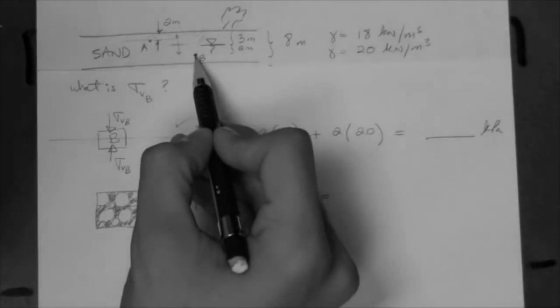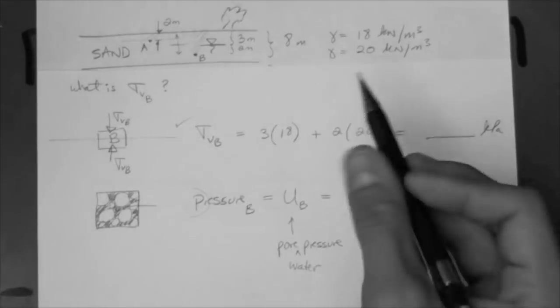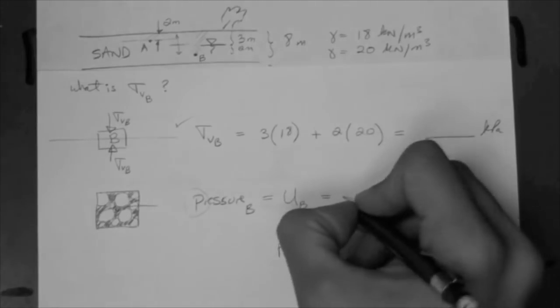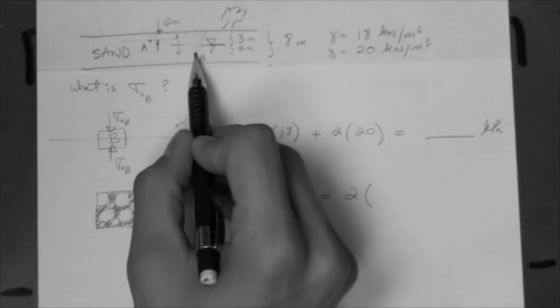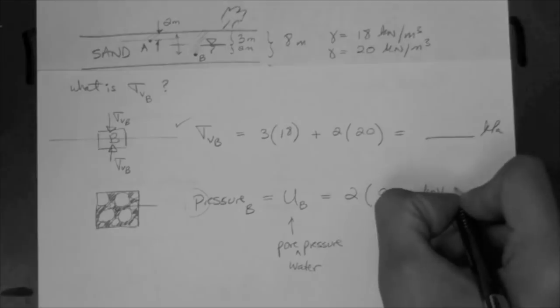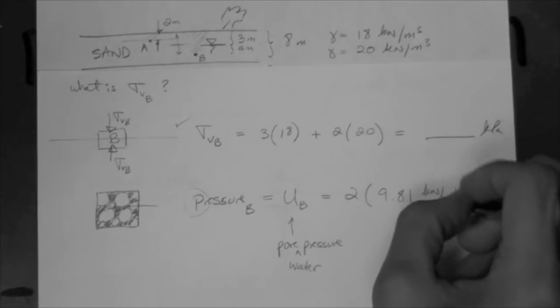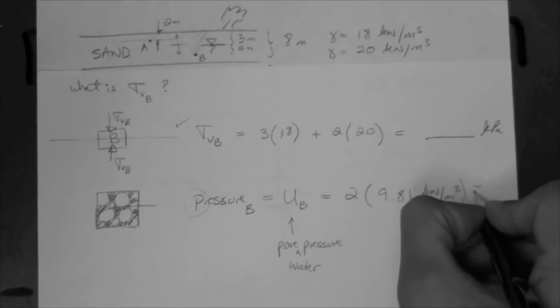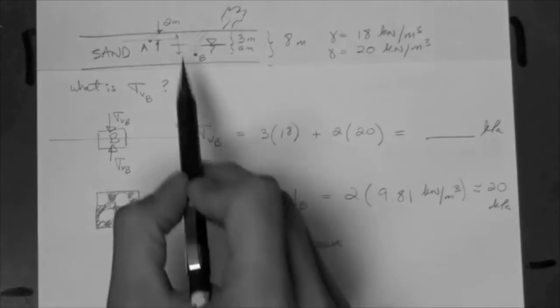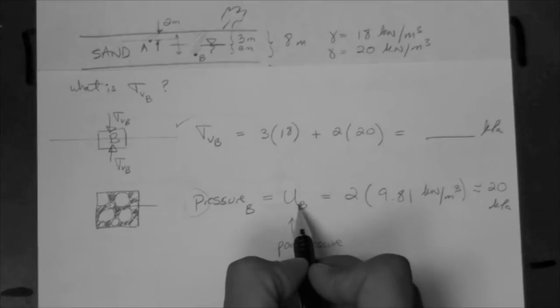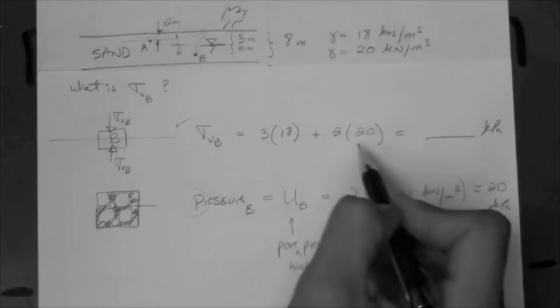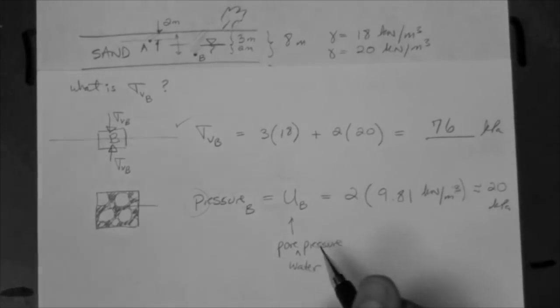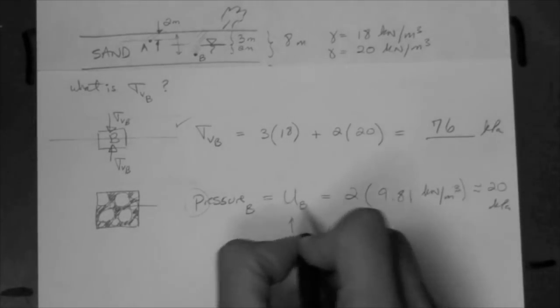At point B, what is it? The same as in a tank of water. At this point, the water is feeling its own weight. So what does the water feel? The water feels 2 meters of water times the unit weight of water. This is about 20 kPa. So at this point we have calculated the vertical normal stress at this point, and we have calculated the pore water pressure as well, but they are separate. The total stress is 76 kPa; the pore pressure is 20 kPa at this point.